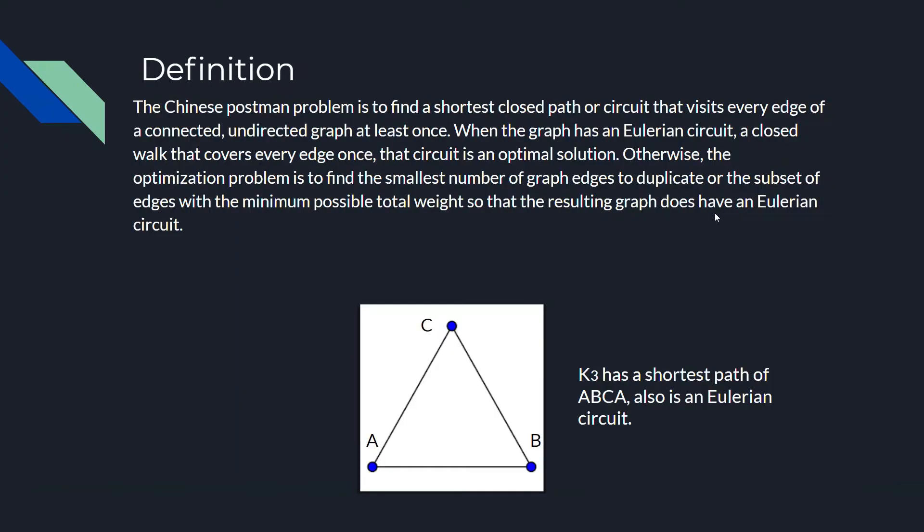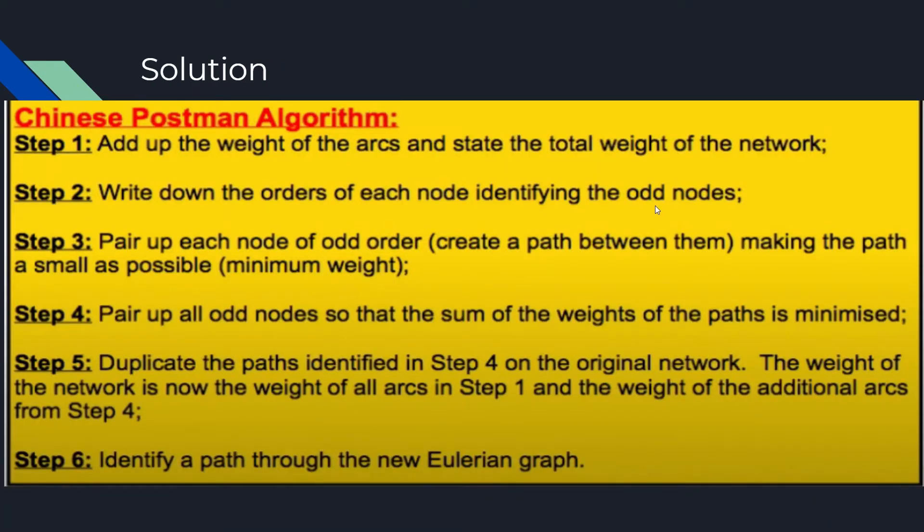So, for example, if we go back to K3 here, every node in K3 has even order, making each vertex an even vertex. So, none of those would be considered odd nodes, because there's an Eulerian circuit already present.